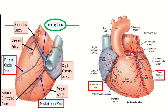Along the anterior interventricular groove, there is a tributary of the coronary sinus — that is the great cardiac vein. On the other hand, we can see the small cardiac vein, which is also a branch of the coronary sinus. The coronary sinus lies in the posterior part of the heart on its posterior surface, and receives tributaries from different parts including the anterior interventricular groove.